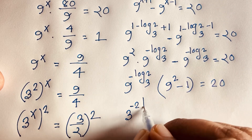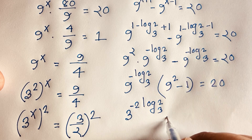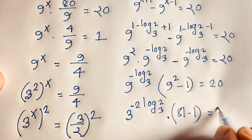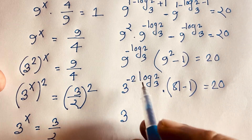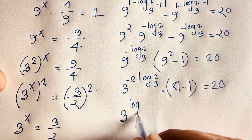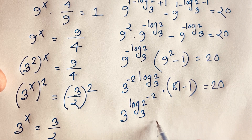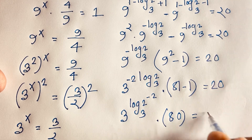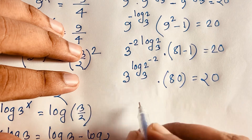The log₃2 exponent moves out, and the minus signs combine: we get 9 to the power log₃2 in the denominator. Since 9 is 3 squared, this becomes 3^(2·log₃2), which equals 2 squared by the change-of-base property. So we have 2^(−2) times 80 equals 20.